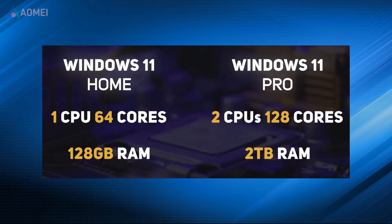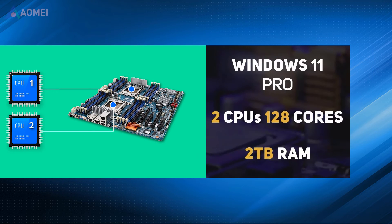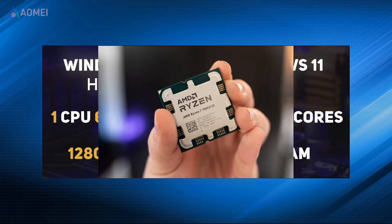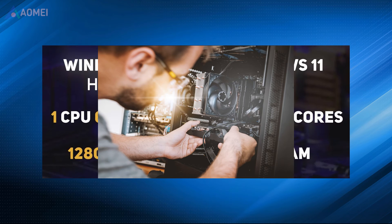Number 1: CPU. Windows 11 Home supports a maximum of one CPU with 64 cores, whereas Windows 11 Pro allows for up to two CPUs and 128 cores. The Home Edition PCs can only have one CPU socket, while the Pro Edition supports two CPU sockets. CPU cores impact the performance and multitasking capabilities of a computer, while CPU sockets determine the compatibility between the CPU and the motherboard. Both aspects are important considerations when building or upgrading a computer system.